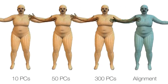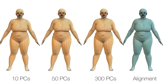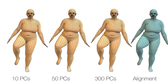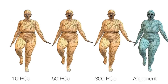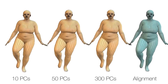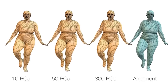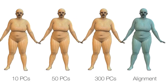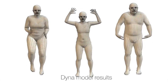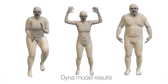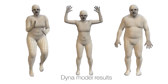We vary the number of principal components: 10 components already capture some soft tissue motion, while 50 produce a result that is noticeably more realistic. We use 300 components to train the Dyna model. Dyna is an extension of SCAPE that combines shape deformations due to a person's identity with those due to their motion.